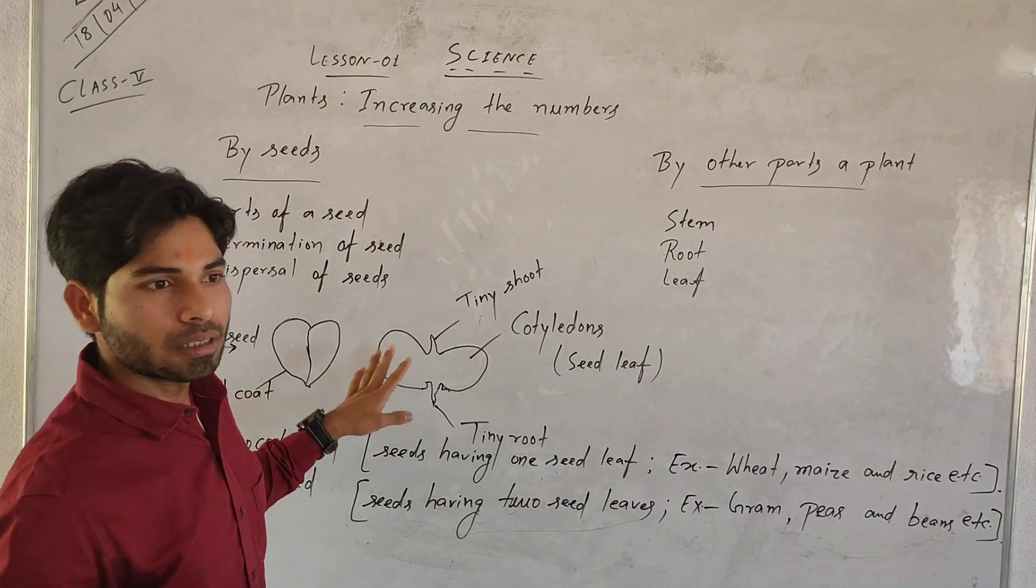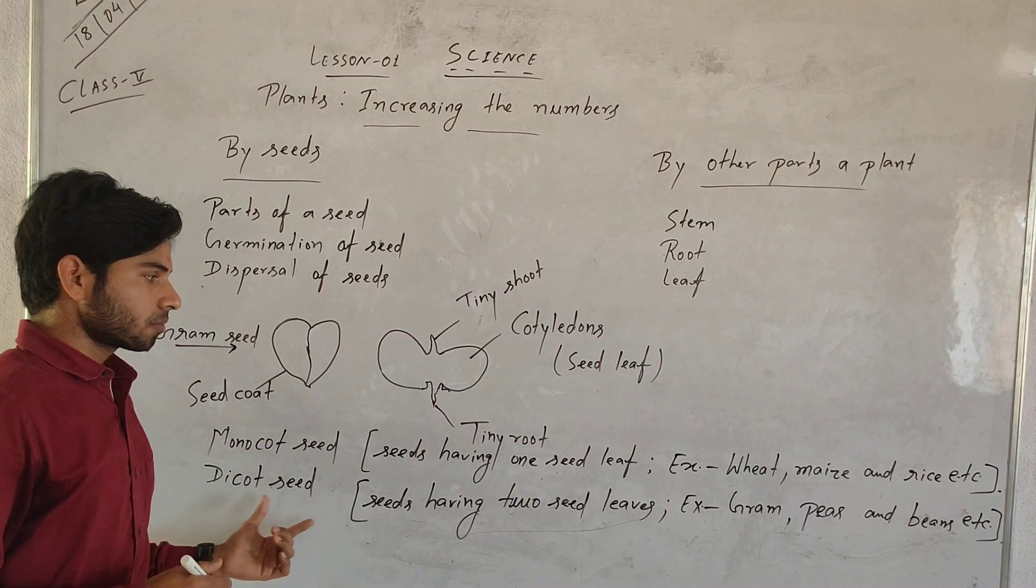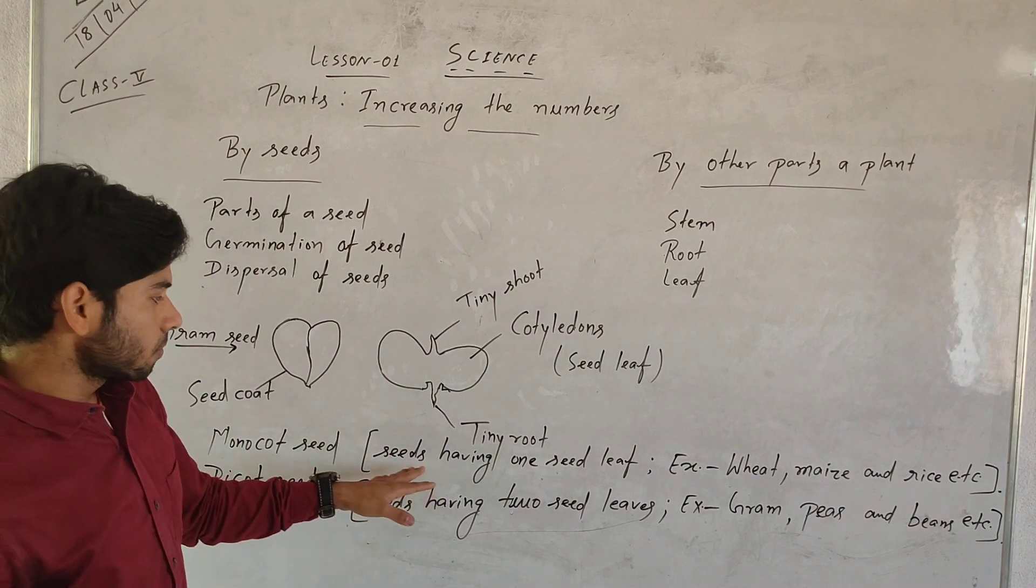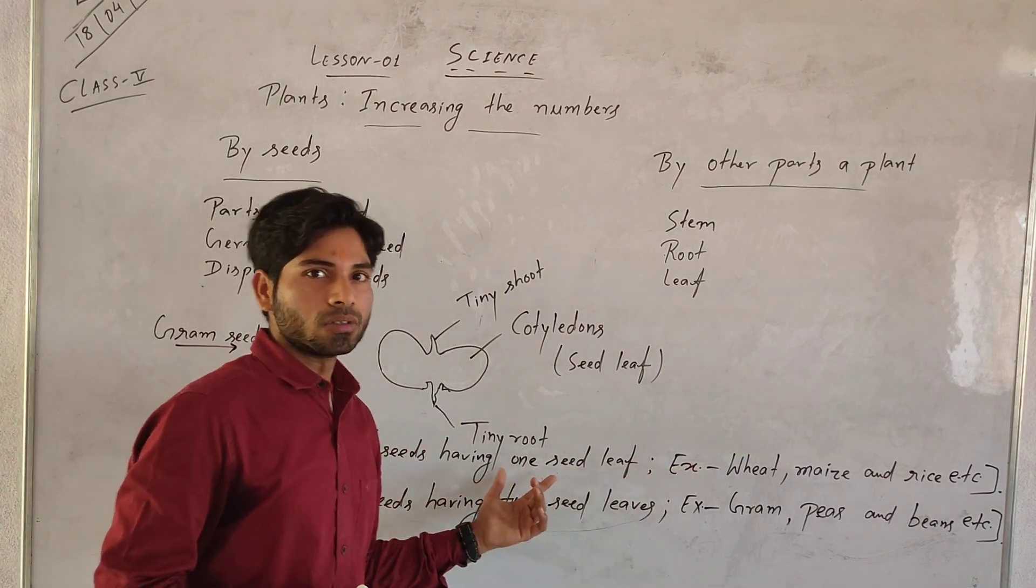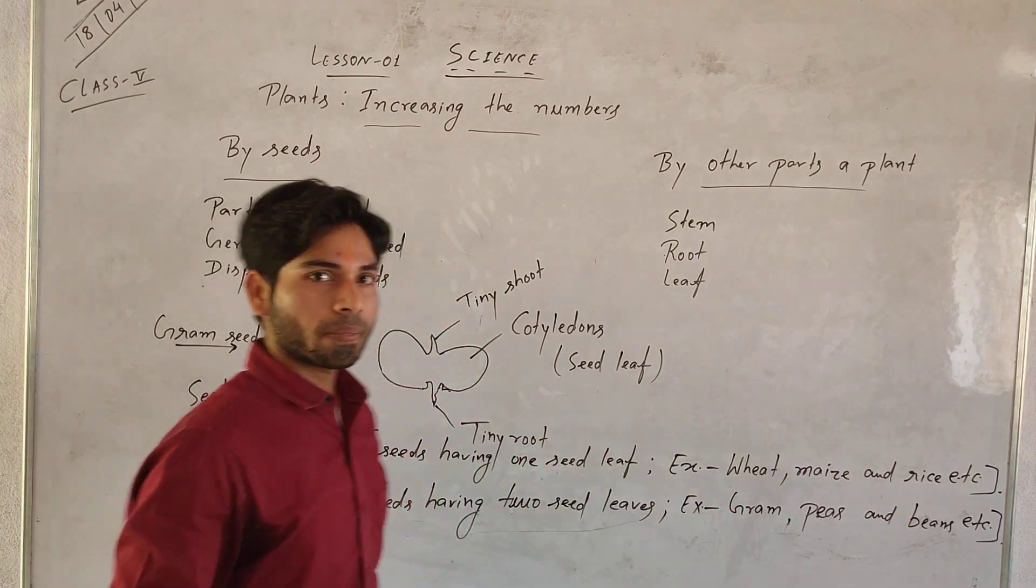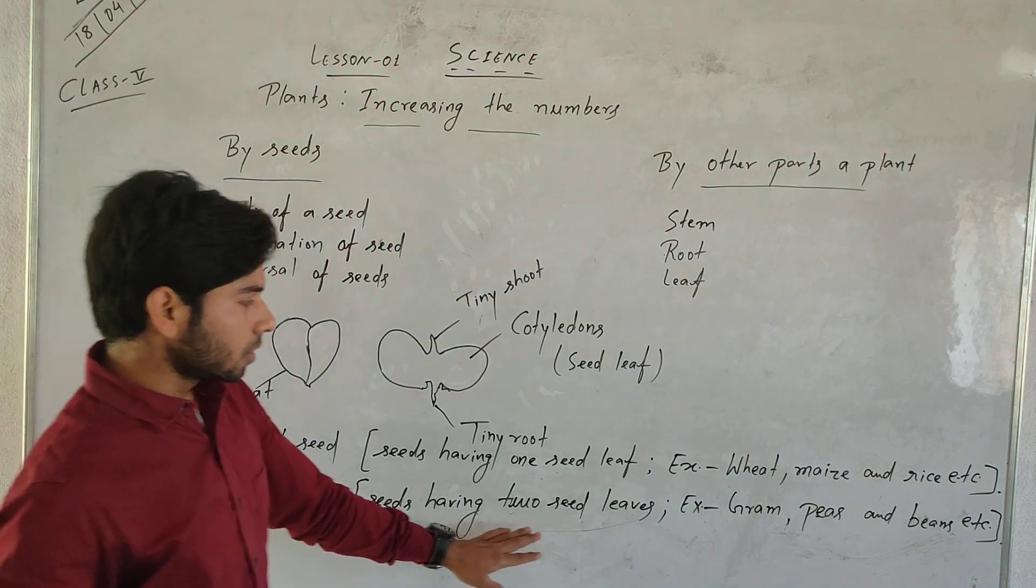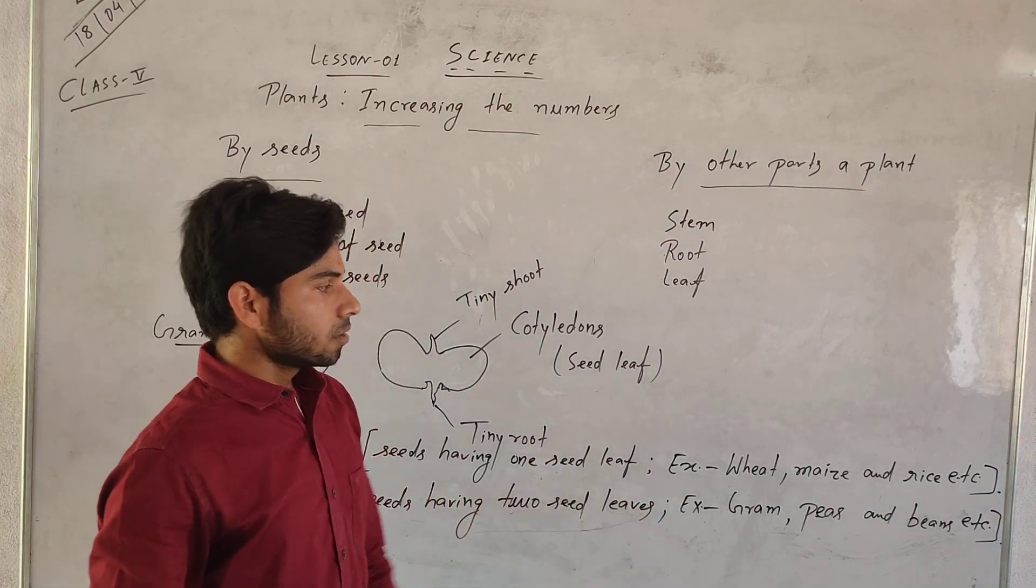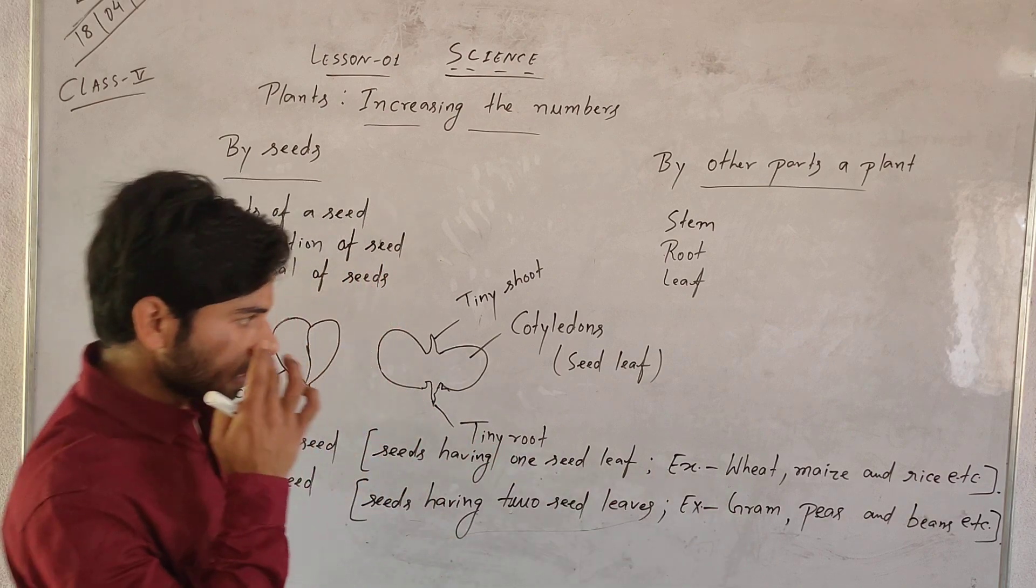If we talk about seeds, there are two types of seeds: monocot seed and dicot seed. What is monocot seed? Seeds having one seed leaf is called monocot seed, for example wheat, maize, and rice. And dicot seed: seeds having two seed leaves is called dicot seed. Examples: gram, peas, and beans.